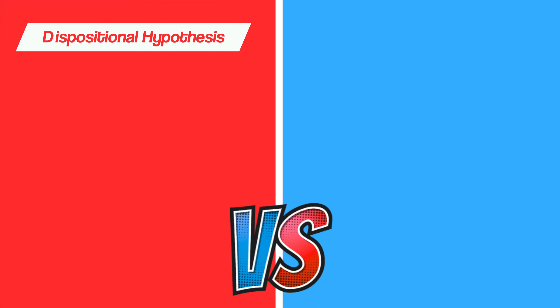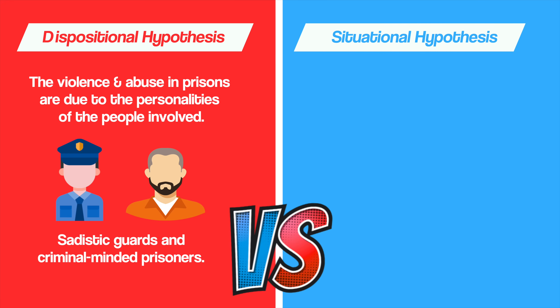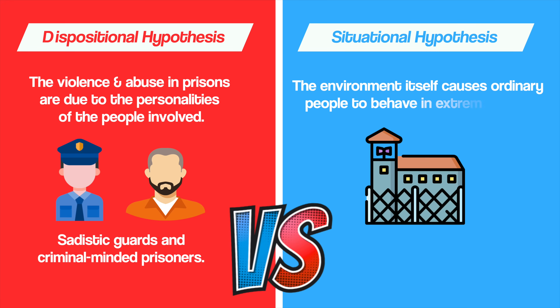Zimbardo's study sought to test two competing ideas. The dispositional hypothesis: the violence and abuse in prisons are due to the personalities of the people involved — sadistic guards and criminal-minded prisoners. Or the situational hypothesis: the environment itself, the prison setting and power dynamics, causes ordinary people to behave in extreme ways.